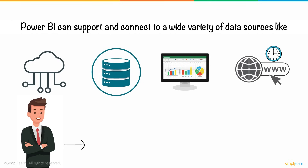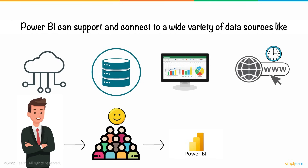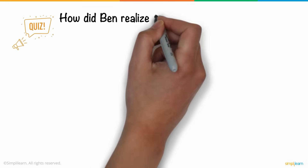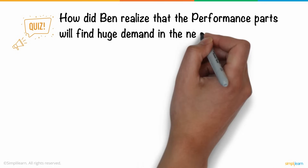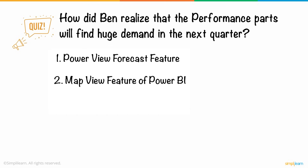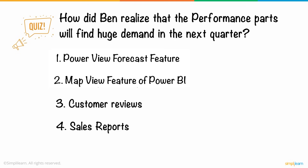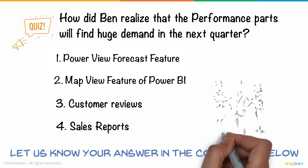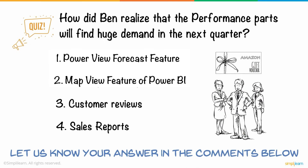Ben keeps his customers happy using Power BI to solve his business problems. Here's a quiz for you: How did Ben realize that the performance parts will find huge demand in the next quarter? 1. Power View Forecast Feature, 2. Map View Feature of Power BI, 3. Customer Reviews, 4. Sales Reports. Let us know your answer in the comments below and three lucky winners will get a chance to win an Amazon voucher.